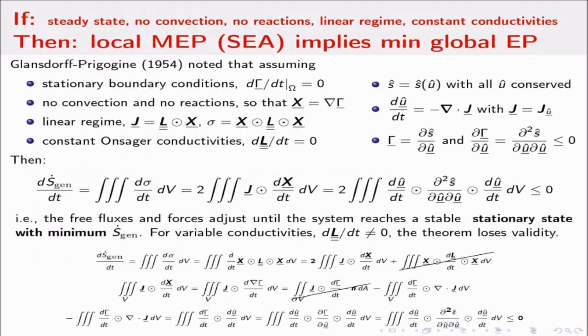The last concept I want to talk about is, why then are people talking about minimum entropy production? Is it minimum or maximum? I want to clarify this because it is a source of confusion sometimes in the literature.